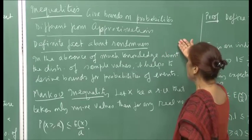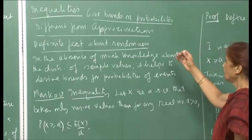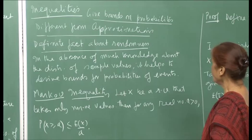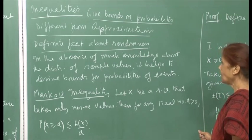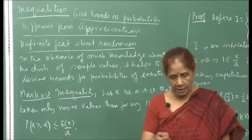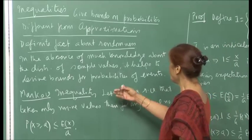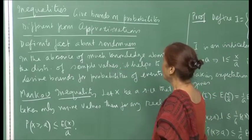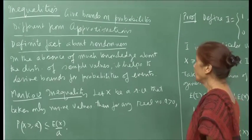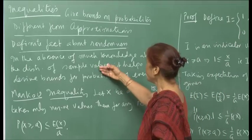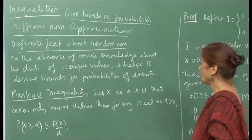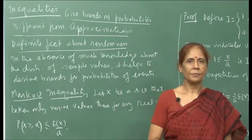Approximations say that the probability may be this, and depending on the situation it may be good or bad. But inequalities have a very definite role to play in your statistical analysis of data. When in the absence of much knowledge about the distribution of sample values, you may just know the mean or the variance of the population, and that is it. It helps to compute bounds on the probabilities of certain events.